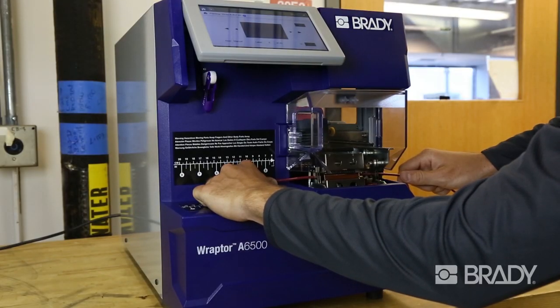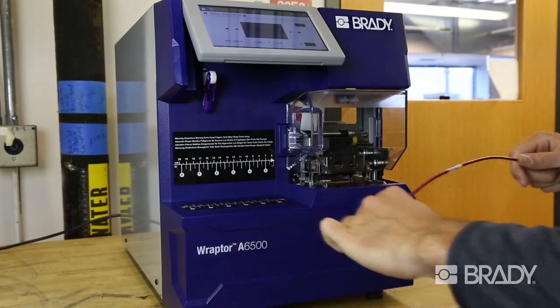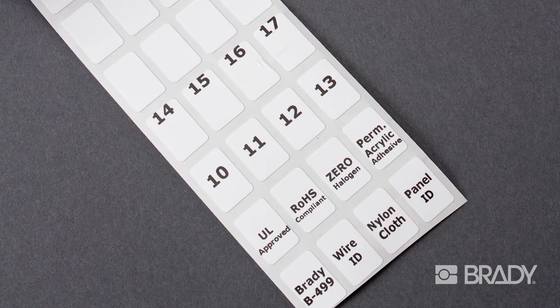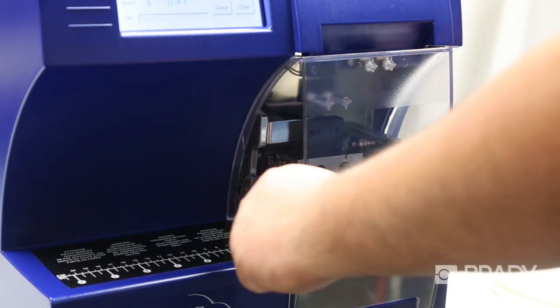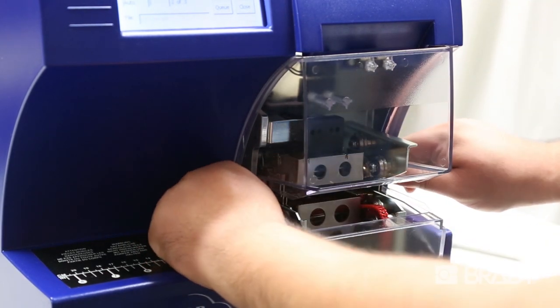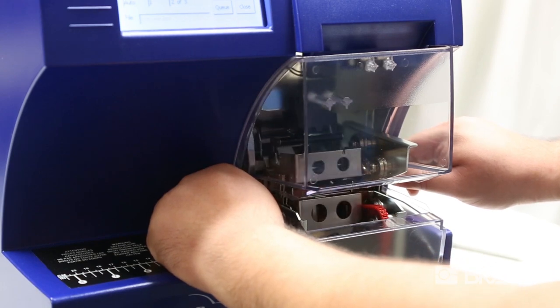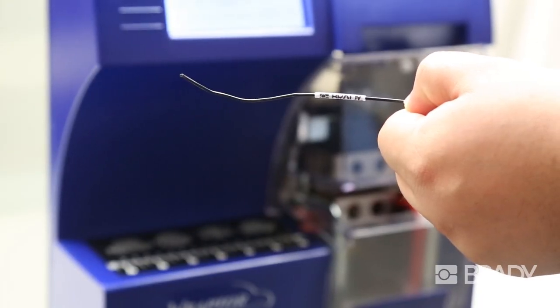With the Raptor A6500, there's less label waste. In pre-printed batch jobs, extra labels are thrown away. With Raptor A6500, there's no pre-printing. Labels are printed and applied as you need them. You get the labels you need, and only the labels you need.